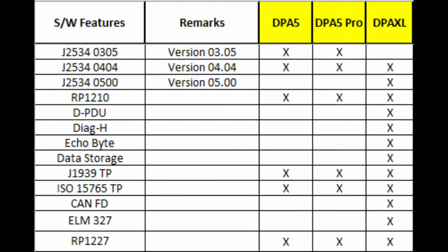Now switching over to the software features of the DPAXL on the chart, we'll go through this briefly. The J2534-0305 is the older version of the J2534 spec. The key with the XL is it's also J2534-0404 and 0500 capable. On the heavy-duty side you have your RP-1210, whether it's RP-1210C or D or an RP-1210 version in the future, the DPAXL is going to handle that. We have some capabilities for DPDU, Diag-H, Echobyte. Data storage is possible. J1939 transport protocol and ISO 15765.